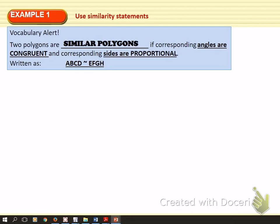If two polygons are similar, then we write it like this. Similar is not quite congruent. The congruent symbol is like this. Similar basically means same shape, but not necessarily same size. So what we need is a symbol that doesn't quite mean congruent, but it's close. What we do is we wipe out the equal sign and say that they're similar.